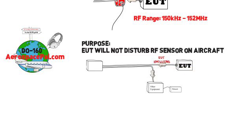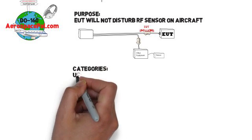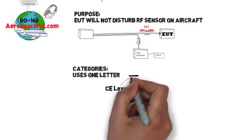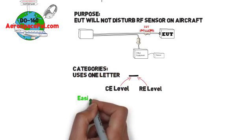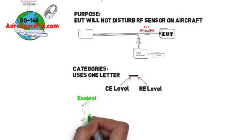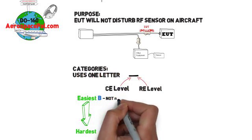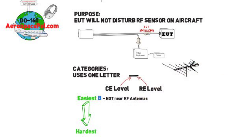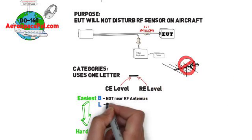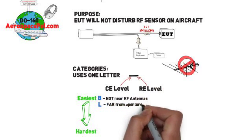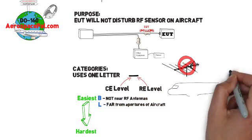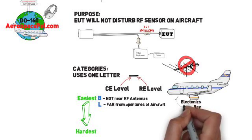Now for section 21, the category is one letter for both conducted emissions and radiated emissions. Going from least stringent to most stringent, the categories are B - products that are not near RF antennas or other sensitive equipment. L - equipment that is far from apertures of the aircraft like windows and far from RF antennas, for example, the electronics bay.